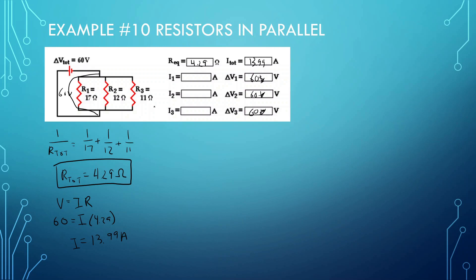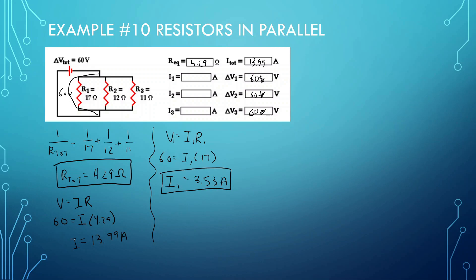Now we can find I1, I2, and I3. V1 equals I1 times R1: 60 equals I1 times 17, so I1 equals 60 divided by 17, giving 3.53 amps. For V2: 60 equals I2 times 12, so I2 equals 60 divided by 12, giving 5 amps.